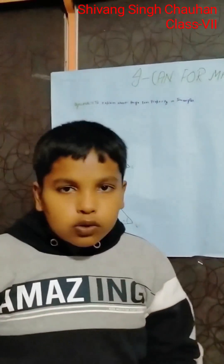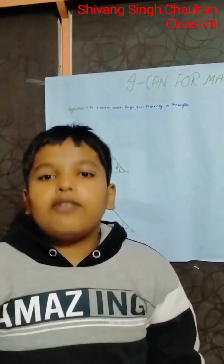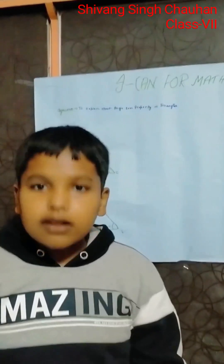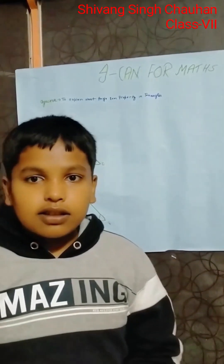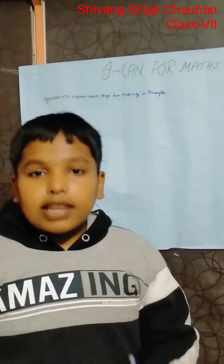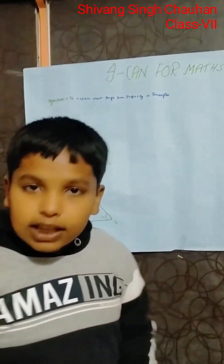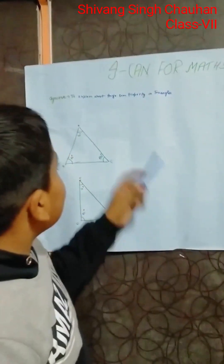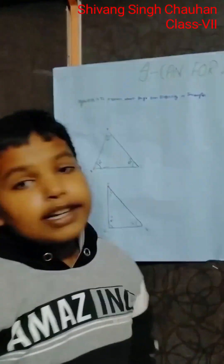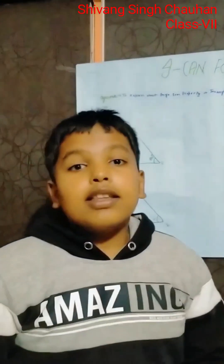Triangles are 2D shapes which have 3 vertices, 3 arms, 3 sides, and 3 angles. They have 3 angles, and through these 3 angles we are going to learn today's topic, that is Angle Sum Property.